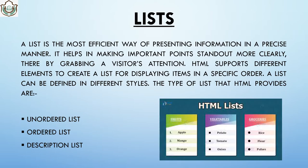First is lists. A list is the most efficient way of presenting information in a precise manner. It helps in making important points stand out more clearly, thereby grabbing visitors' attention. HTML supports different elements to create a list for displaying items in a specific order. In HTML also we present data or information using a list menu. It helps us to manage important points more clearly.